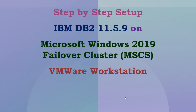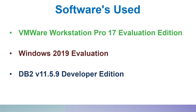Hello, in this tutorial we will learn how to do the step-by-step setup of IBM DB2 11.5.9 on Microsoft Windows 2019 Failover Cluster. This tutorial is recorded using VMware Workstation. The softwares used are VMware Workstation Pro 17 Evaluation Edition, Windows 2019 Evaluation Edition, and DB2 11.5.9 Developer/Community Edition. You only need these three softwares to complete this lab.